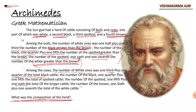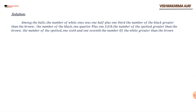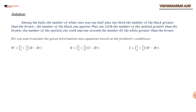We are going to find what was the composition of the herd. These are going to be our initial variables — remember that capital letters are for bulls and small letters are for cows: W for white, B for black, S for spotted, Br for brown. We are going to decode the first paragraph about bulls.